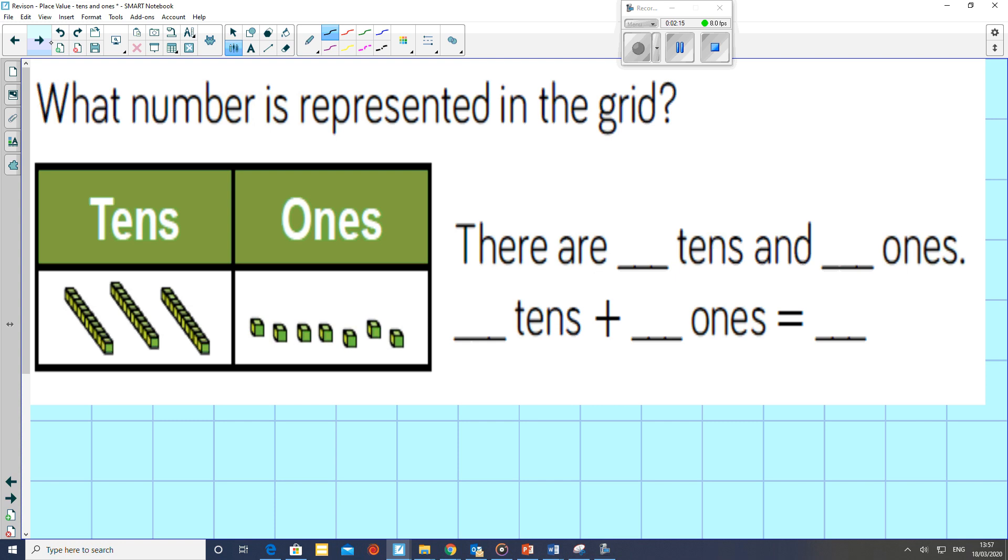There are 3 tens. So if we count them in tens, as in columns, tens in columns: 10, and another 10, and another 10. 10, 20, 30. There are 3 tens.